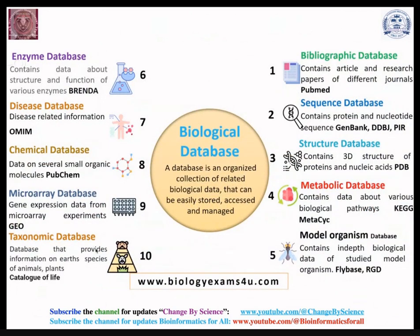An important aspect of bioinformatics is understanding the major biological databases. NCBI is one of the biggest and oldest databases in biology. Key database types include bibliographic, sequence, structure, metabolic, chemical, disease, taxonomical, microarray, and enzyme databases. There are hundreds of databases, and familiarity with the relevant ones depends on your project requirements. A database is an organized collection of related biological information that can be easily stored, accessed, and managed.